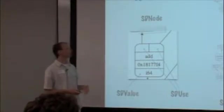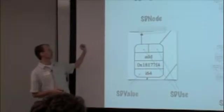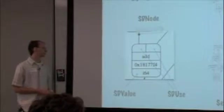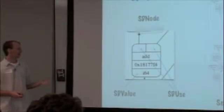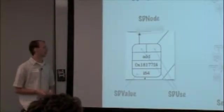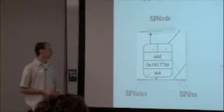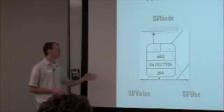So the main node in the selection DAG is the SD node. Nodes can have multiple operands. In the code gen, those are called SD uses. And unlike LLVM IR, in the selection DAG, nodes can have multiple values, multiple result values. We call those SD values. This node has only one.